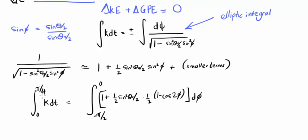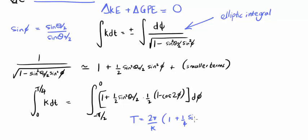I've integrated over a quarter period. The limits on the right-hand integral are for when theta is equal to theta 0 and when theta is equal to 0. Evaluating the integrals on both sides gives the final result of the period, which is T equals 2 pi over k multiplied by 1 plus a quarter of sin squared theta 0 over 2.